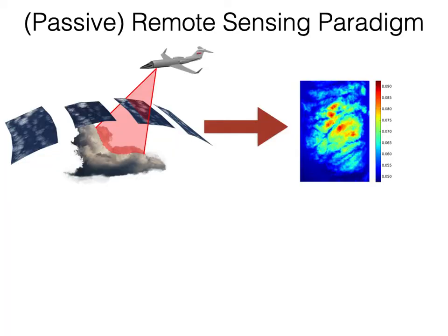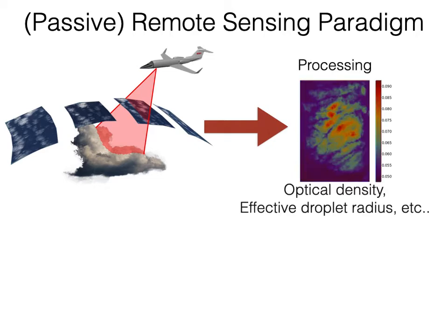Remote sensing is typically done by acquiring images and processing pixels individually, transforming radiance measurements into recovered cloud properties. These properties could be, for example, the optical thickness or effective droplet radius.